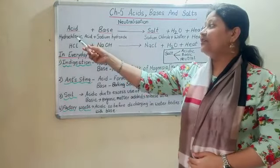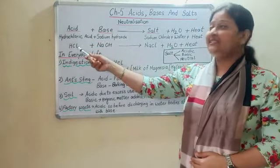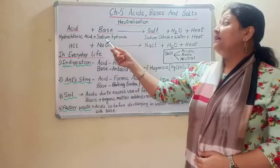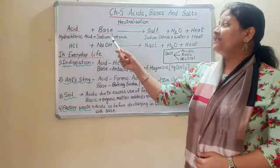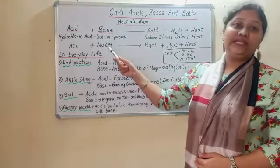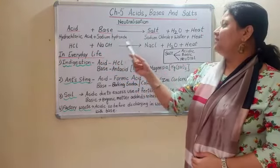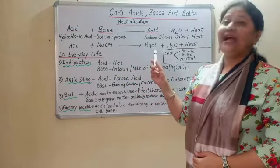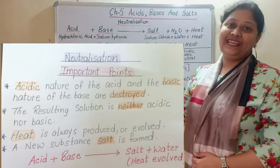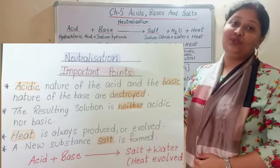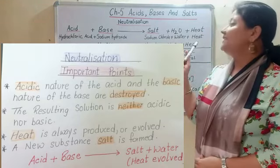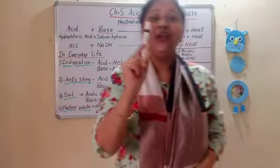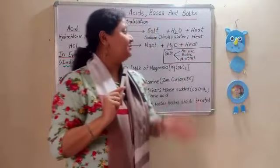One example: hydrochloric acid HCl combines with sodium hydroxide NaOH, which is a base, and it gives sodium chloride NaCl — also known as common salt — along with water and heat.